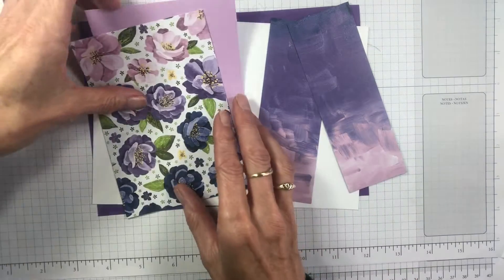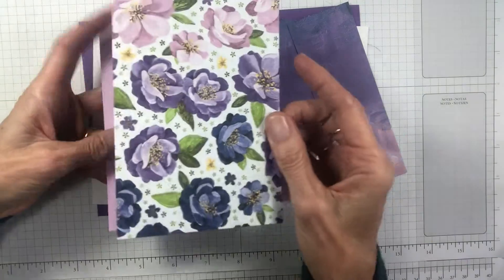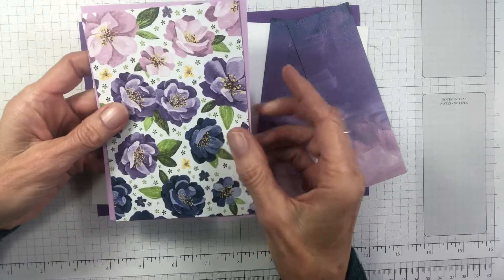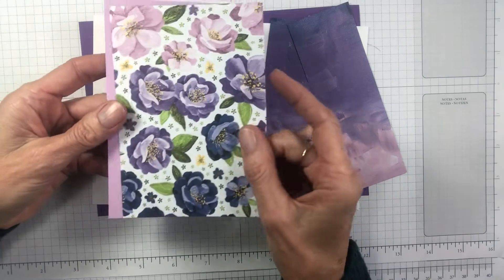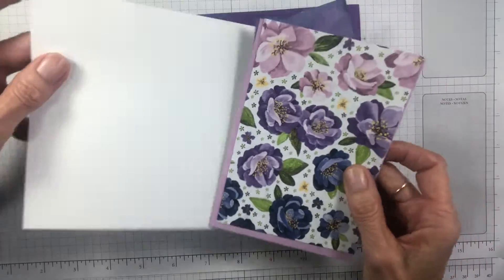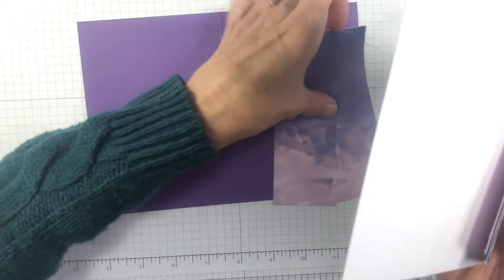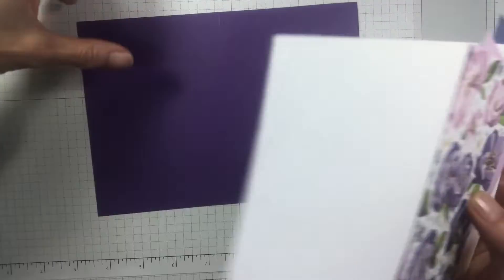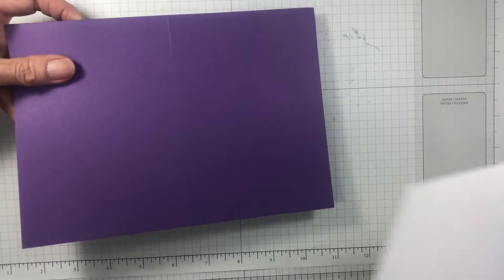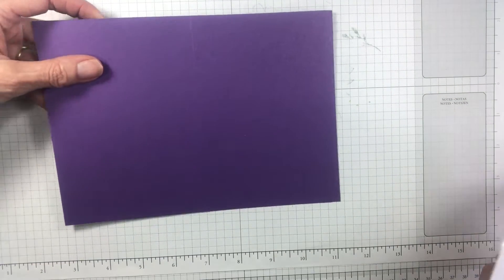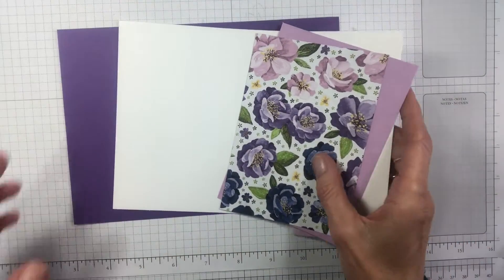So what you'll need is a piece of designer series paper. I'm going for a different pattern on this card and that teams really nicely with the fresh freesia. We've got a white card. I'll give you the measurements shortly. Two pieces of designer series paper and your base card. That's your standard base size.